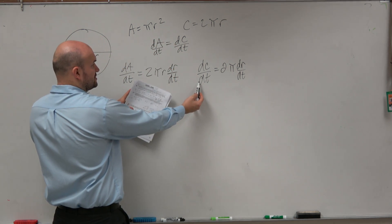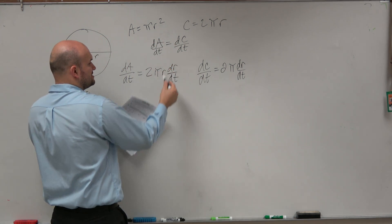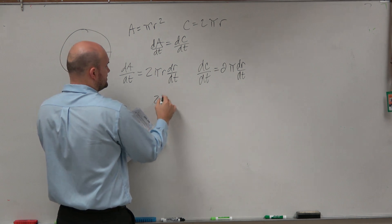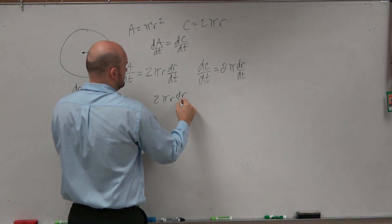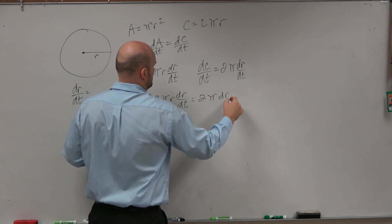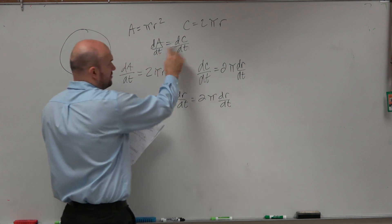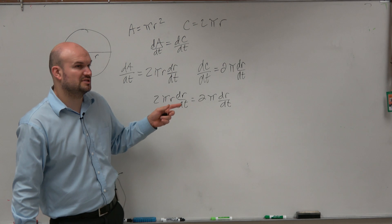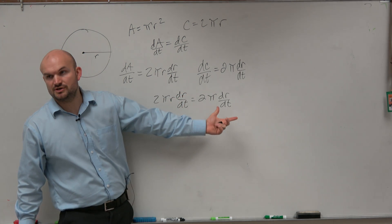Now, these two are equal to each other. But rather than writing it like this, would it be OK, then, if we just did this? Instead of writing the dA/dT is equal to dC/dT, we could just write what their expressions are equal to.